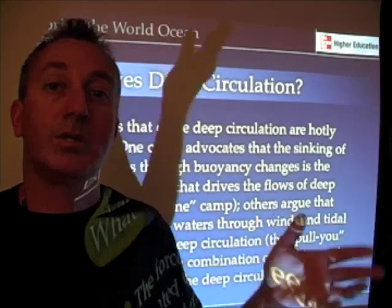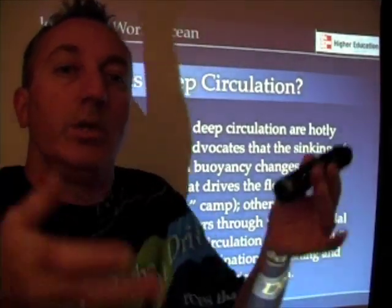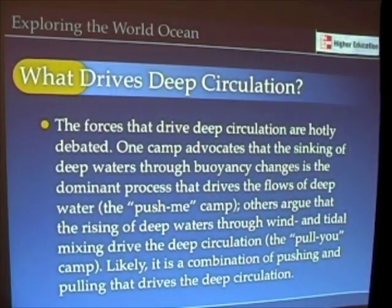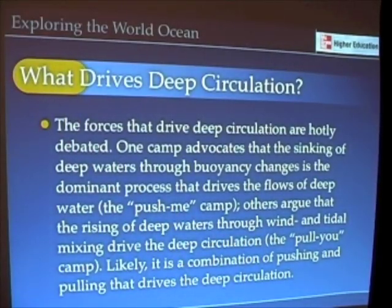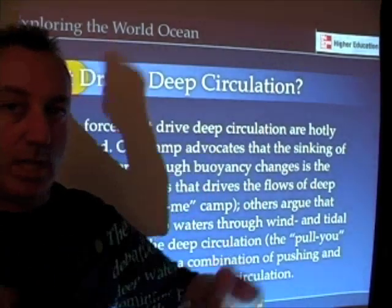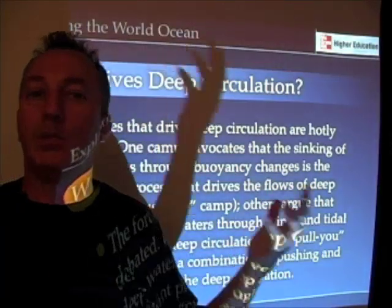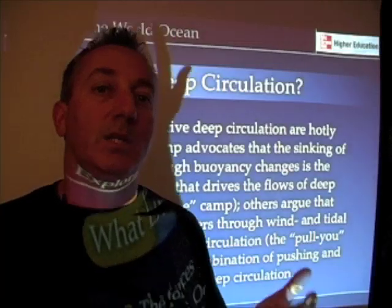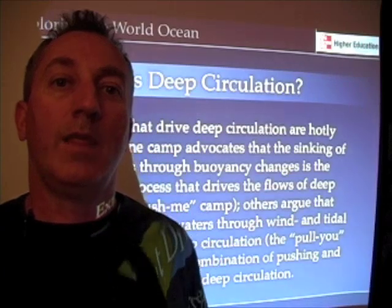The 'pull you' camp argues that mixing of water across oceanic ridges due to tides and other things pulls water toward the surface. This group holds that it actually takes mechanical forces — wind mixing, turbulence, upwelling — to bring that water back up to the top. Likely it's a combination of both: the sinking due to buoyancy changes and the pulling up due to upwelling and other kinds of forces both contributing to deep ocean circulation.